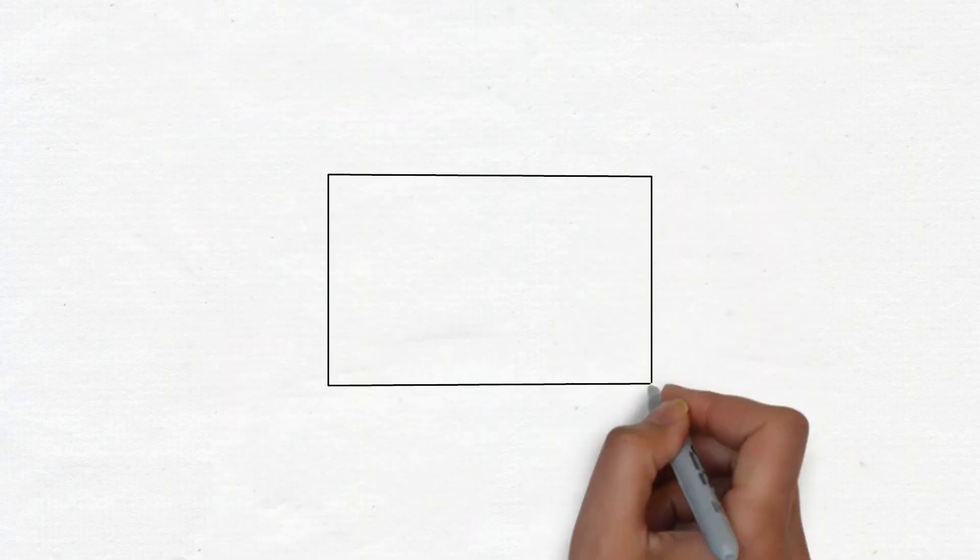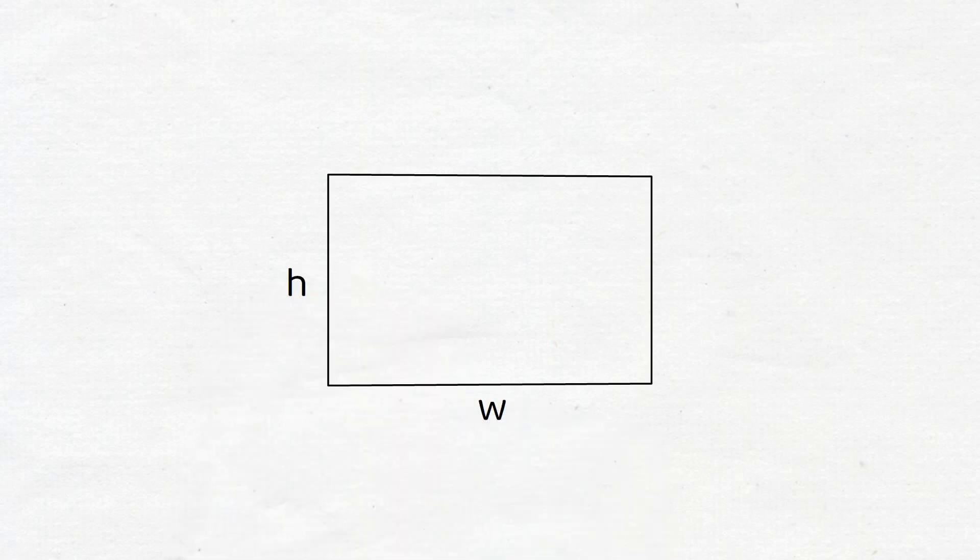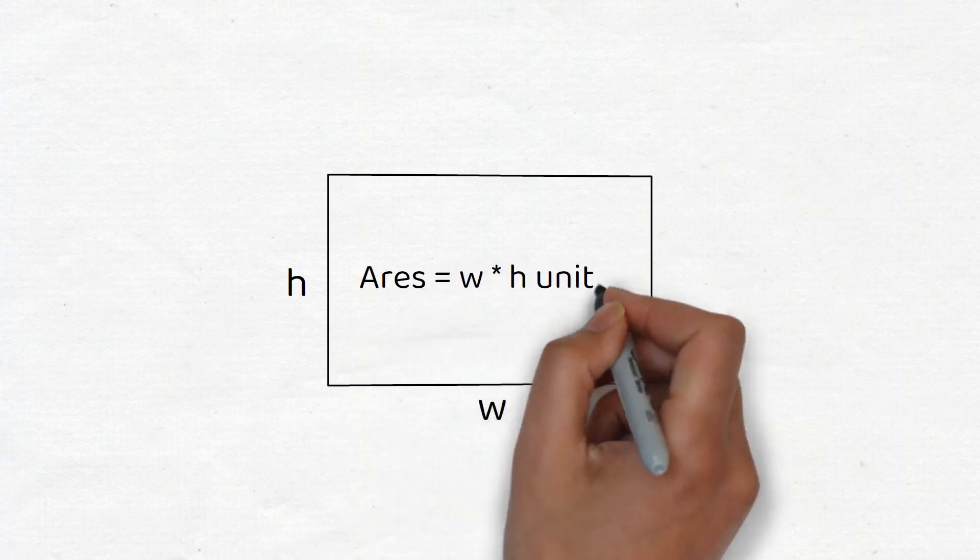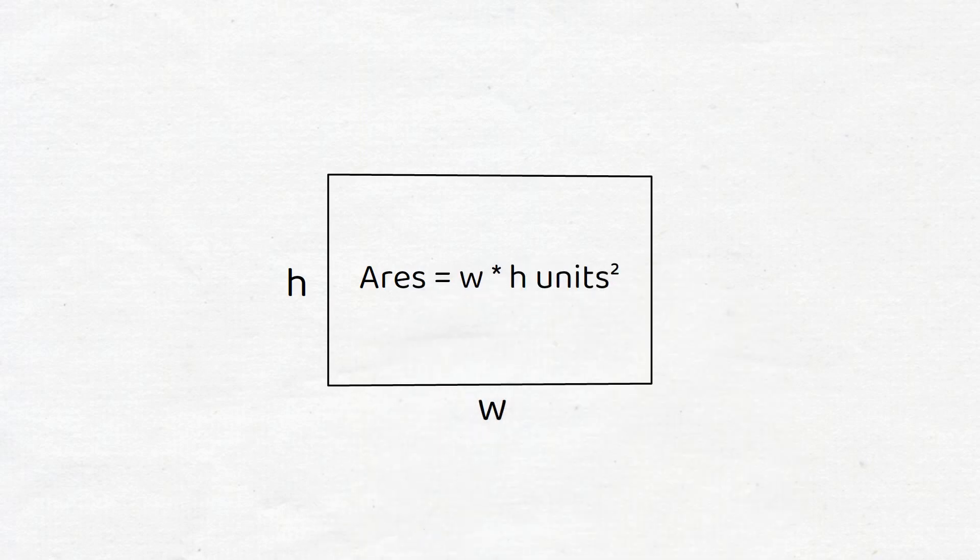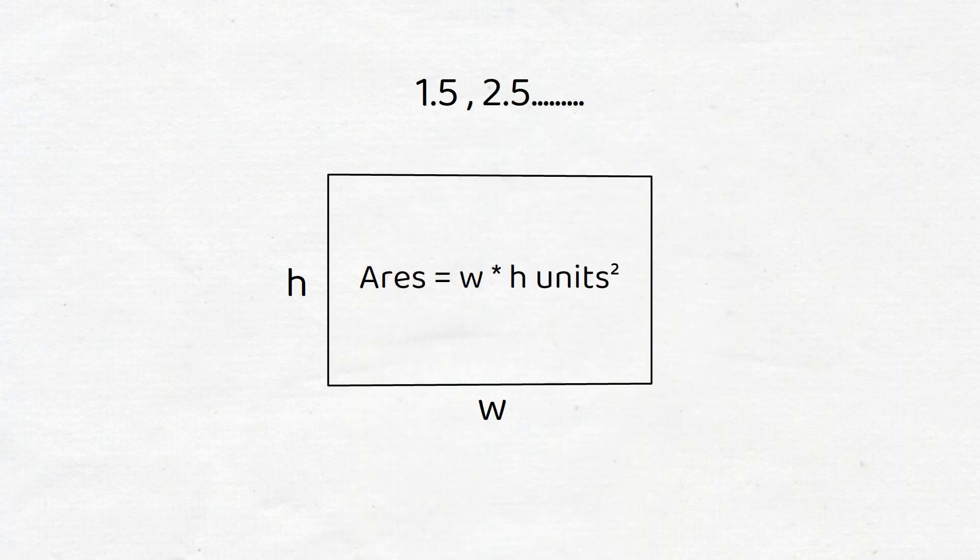If a rectangle has a width w units and a height h units, then its area is w times h units squared. Note that this formula makes sense even when w or h are not integers, whole numbers.